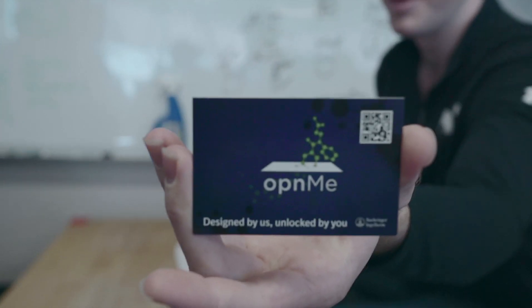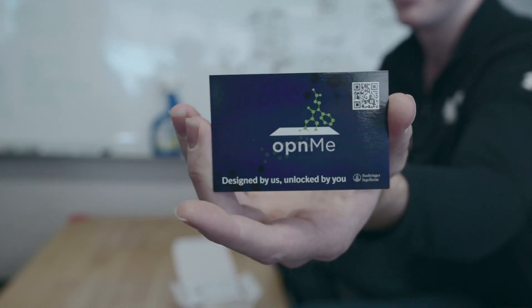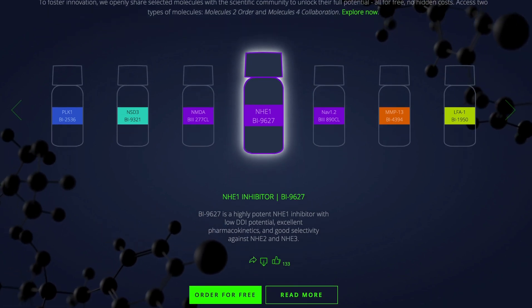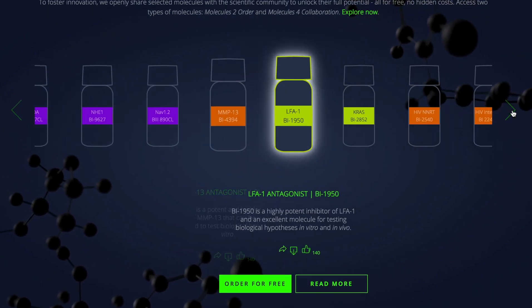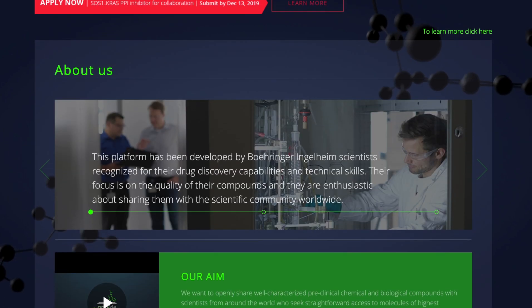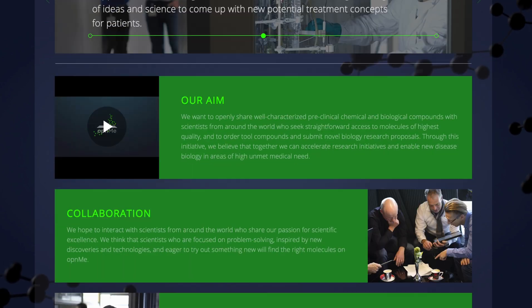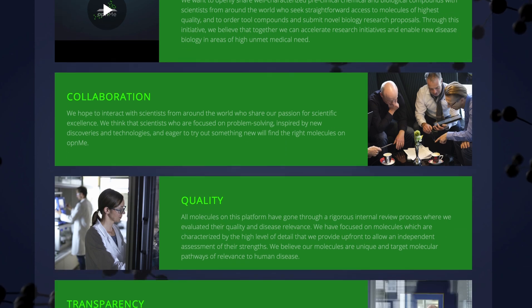There's a website called Open Molecules where you can select from maybe 60 or so compounds. These are drugs or different chemical compounds that Boehringer Ingelheim developed to some extent and then tried to open up to the community to see if they could get researchers around the world using their reagents to make some better drugs.